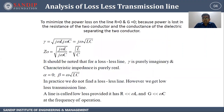Analysis of lossless transmission line. To minimize the power loss on the line, r is equal to 0 and g is equal to 0, because power is lost in the resistance of two conductors and conductance of the dielectric separating the two conductors. Gamma is equal to under root of j-omega-L times j-omega-C, so gamma will be j-omega times under root of LC. Z-naught is equal to under root of j-omega-L upon j-omega-C, so that will be under root of L by C.